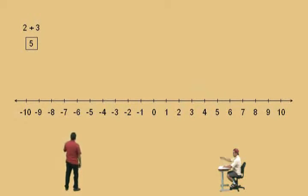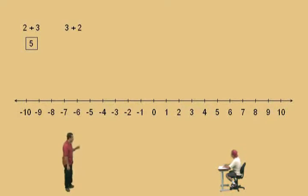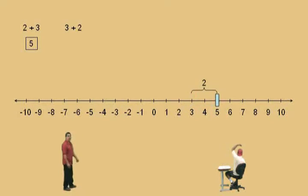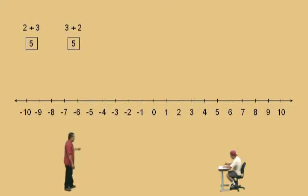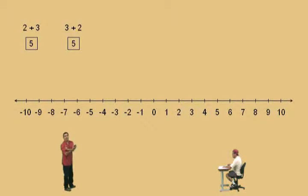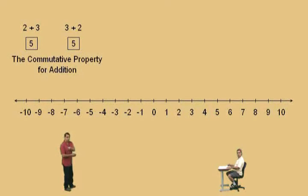Now watch what happens here, Charlie. We're going to switch the order on 2 plus 3 and make it 3 plus 2. If we're doing 3 plus 2, we start at 3 and we move to the right 2 times, which again gives us 5. And so, 2 plus 3 and 3 plus 2 both give us the same answer. That is what's called the commutative property for addition.